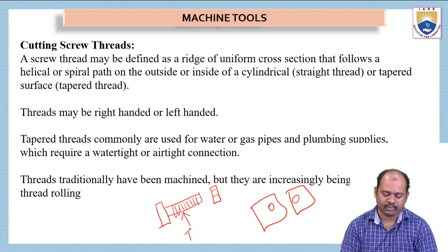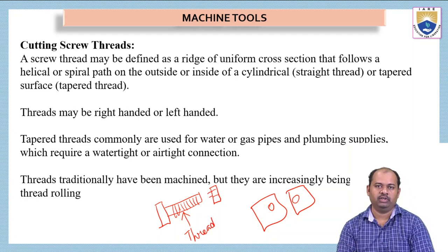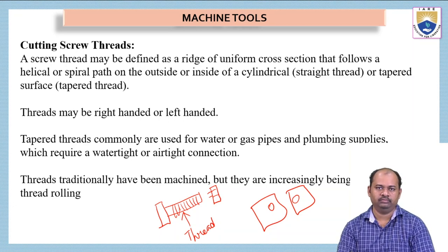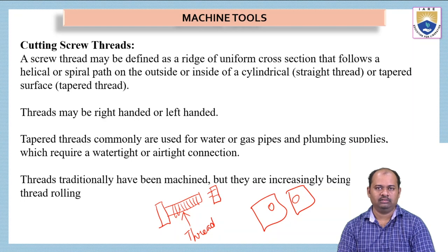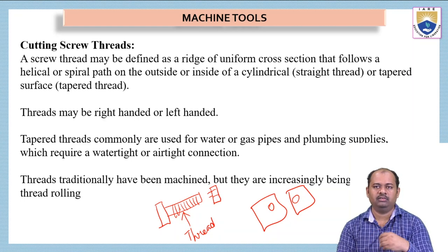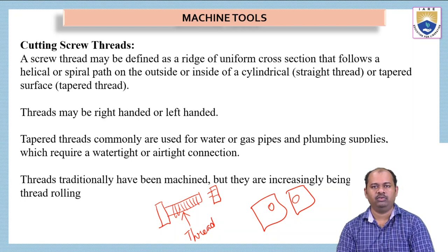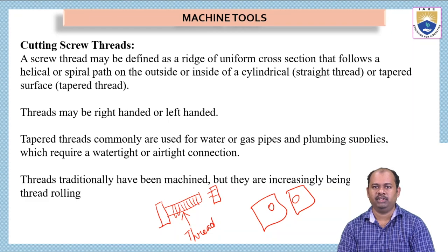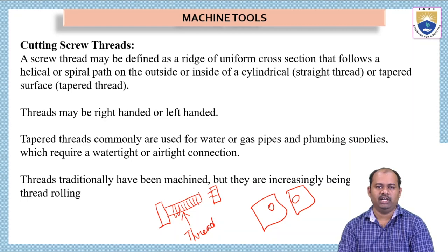This is threading, and also on the inside of the bolt we have to do the threading process. There are two threads we have to do: one on the outer surface of the cylinder, and the inside surface of the bolt. We have to do threading on these two surfaces — not only this, we have to do threading operations in many applications. Particularly, we are doing this process on a lathe machine.